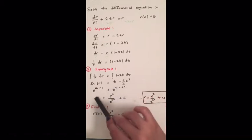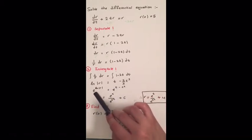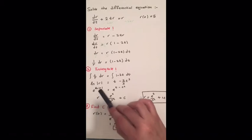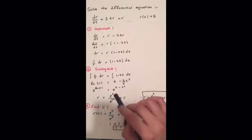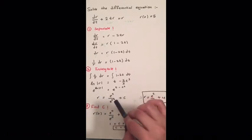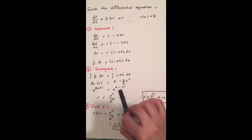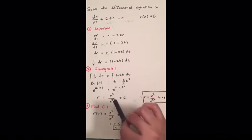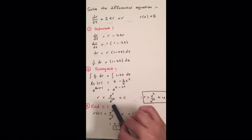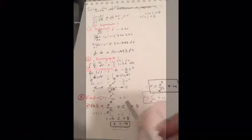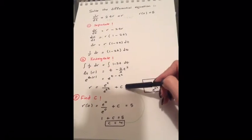Now we know that e will cancel with the natural log, so we will have only the absolute value of r. From the exponent rules we know that when we have a minus in the exponent it means division, so we will put e to the t over e to the t squared, plus a constant c. We are usually done until this part of the solution.